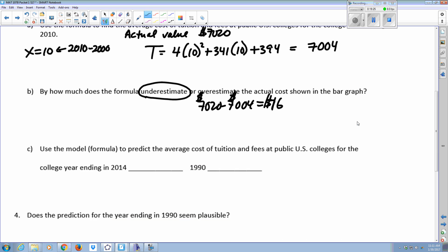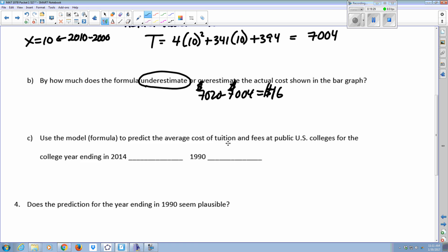By how much does this formula underestimate or overestimate the actual cost shown in the bar graph? It certainly underestimates it and it underestimates it by $16. So your textbook will be asking you about whether your models underestimate or overestimate the actual value. That's pretty good as an estimate. Any questions so far on A or B and how to use the model in predicting or estimating values? So let's take a look at C. Use the model or formula to predict the average cost of tuition and fees for the year ending 2014 and then for the year 1990. I want everybody to confer to make sure you all agree before you tell me what the cost is for each of those years.